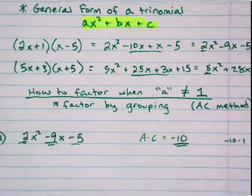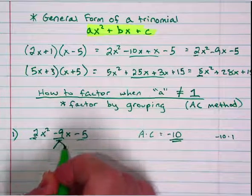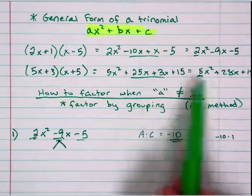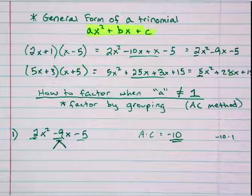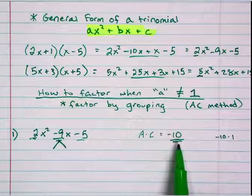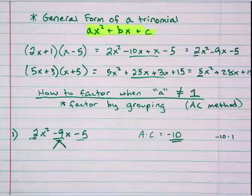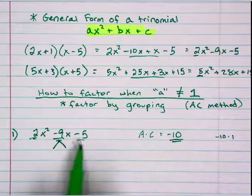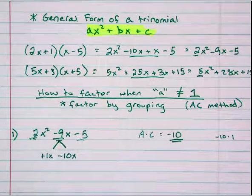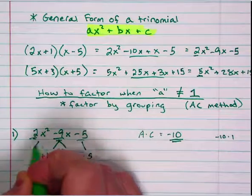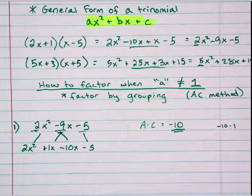Unlike what we did before, this time I'm going to split apart the original trinomial into four terms. I'm going to split the middle term using negative 10 and positive 1. I'll put the negative 10 with the 5, so I'll write it as 2x squared plus 1x minus 10x minus 5. These are the four terms that are the result of multiplying two polynomials together. Now I split this right down the middle. Looking at the left side, 2x squared plus 1x has a greatest common factor of x, leaving 2x plus 1.